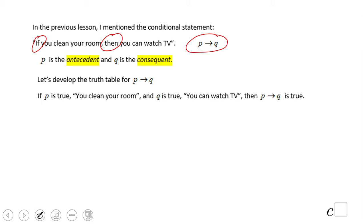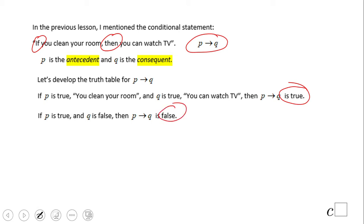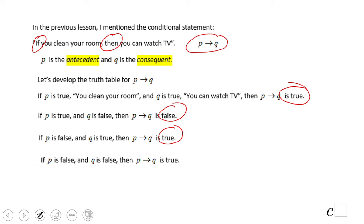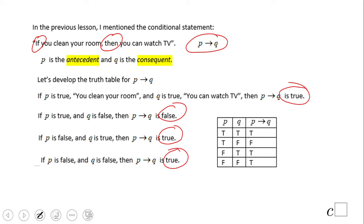Now we're going to develop a truth table using some examples. The original statement is: if you clean the room, then you can watch TV. Notice that is a true statement. What happens if P is true and Q is false? You clean your room but you cannot watch TV — that means the promise is broken, so that's false. The third case: P is false, Q is true — P then Q is true. You did not clean your room but you still watch TV; I still keep my promise, so it's true. The last one: P is false, you don't clean the room, you cannot watch TV — I still keep my promise, so it's true.